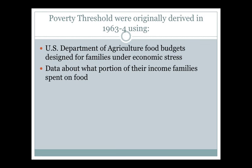The poverty thresholds were originally derived in 1963 using U.S. Department of Agriculture food budgets designed for families under economic stress, as well as data about what portion of their income families spent on food. That was used as the calculation for the food dimension of the threshold.